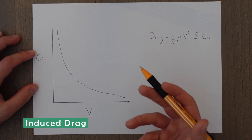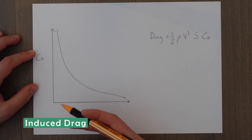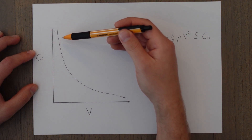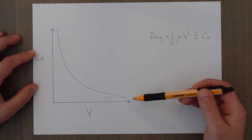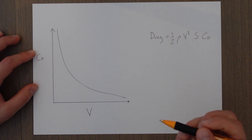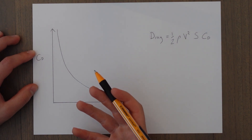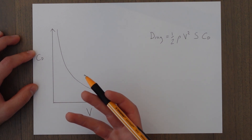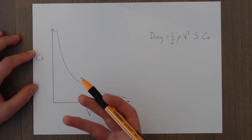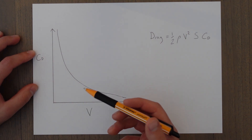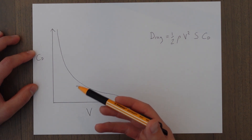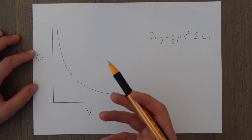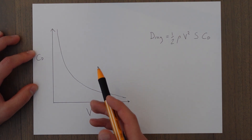An easy way to explain induced drag again is with a graph. As you can see it's the opposite case to parasitic drag — it decreases as we get faster. Basically when we travel slower, the air has more time to be disturbed by the wing passing through it, and therefore we get stronger forces, more downwash, and a larger induced angle of attack, which means our reaction force is a greater proportion of drag than lift.